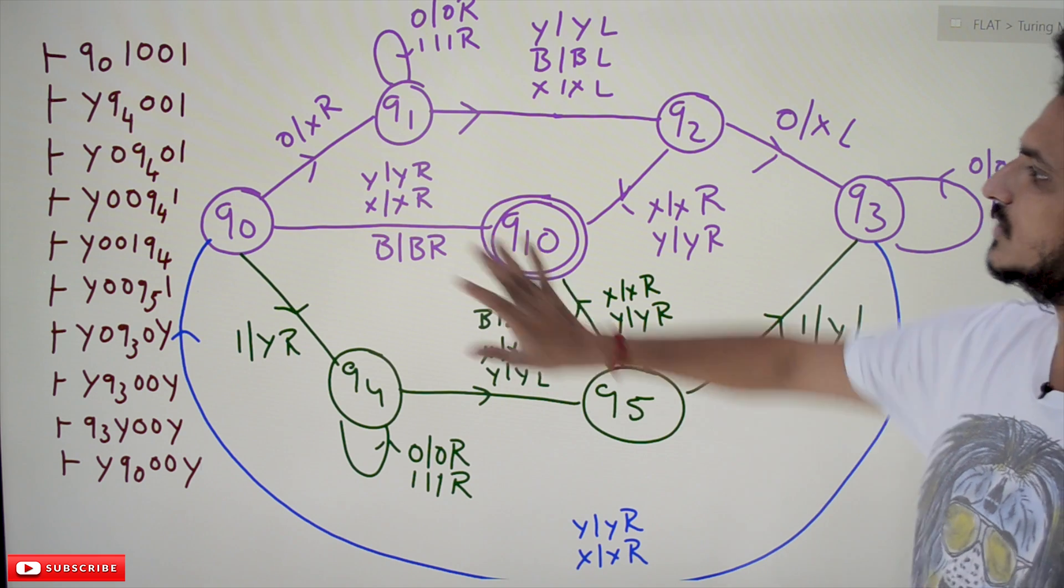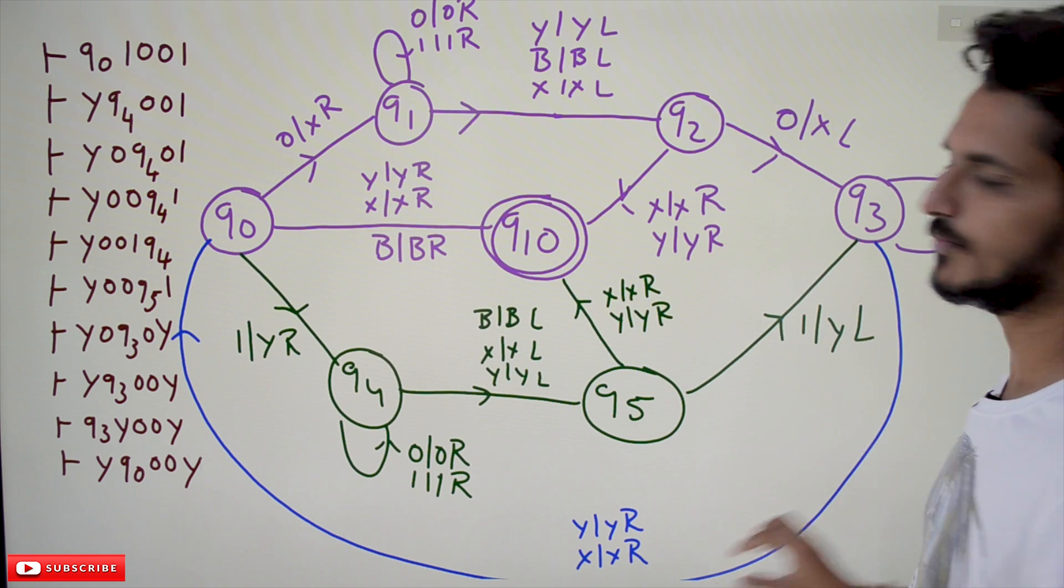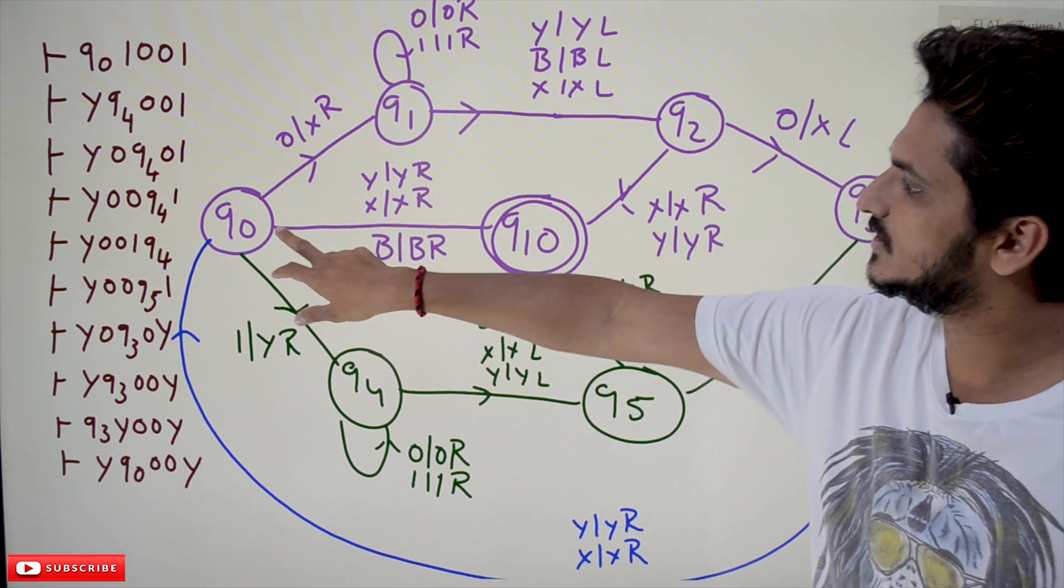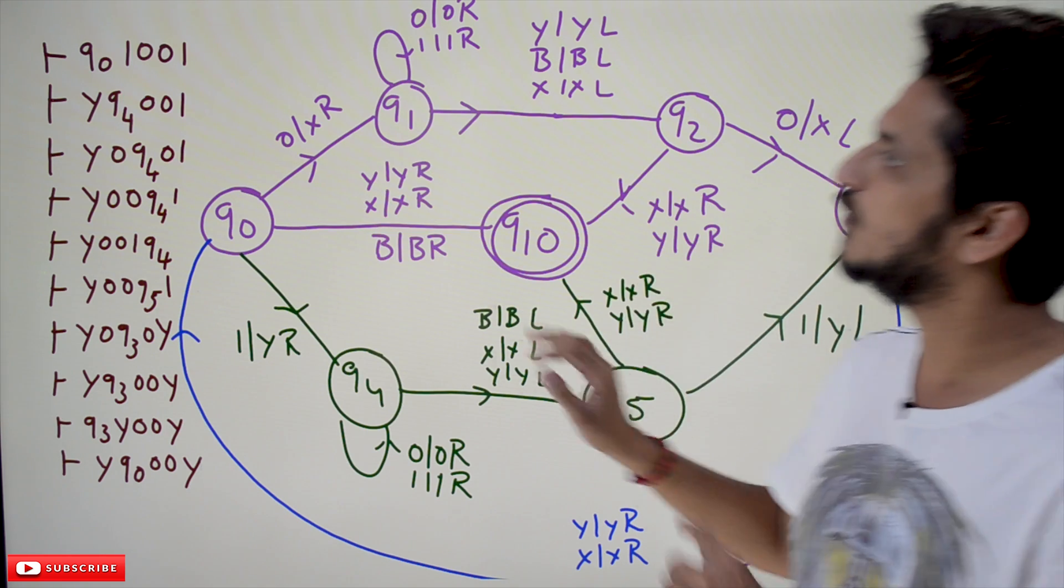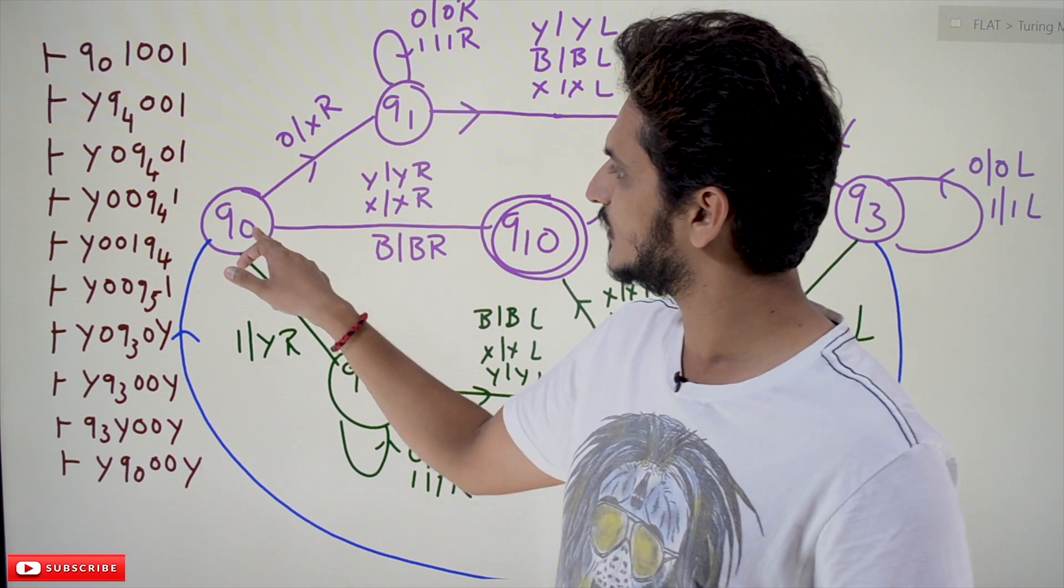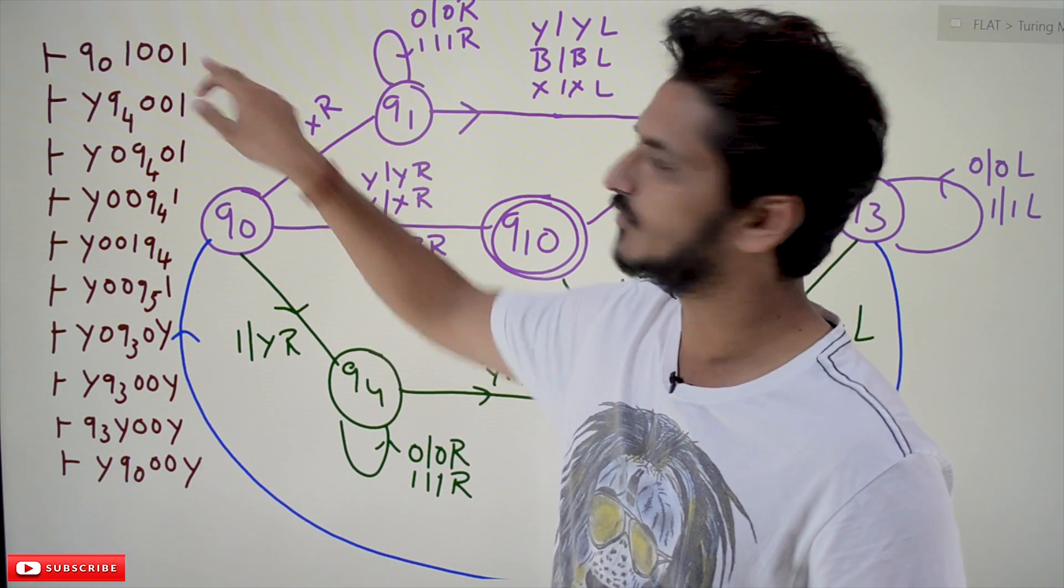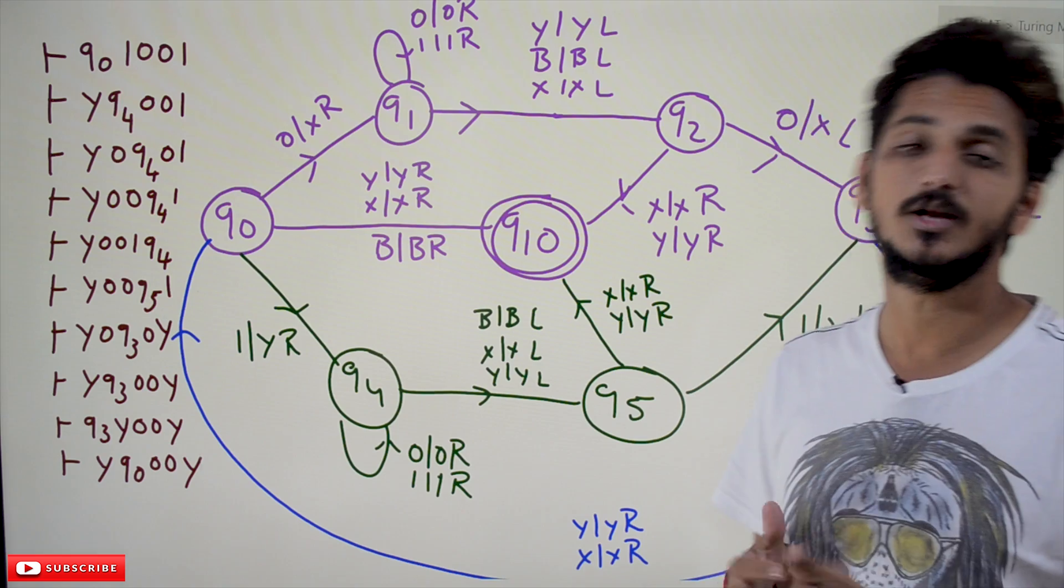So how to show that? This is the example which we considered in our previous classes. This is the Turing machine for accepting palindrome. Let's see how we will show that. Q0, we start from Q0. Take the input string 1001. That is our input string.